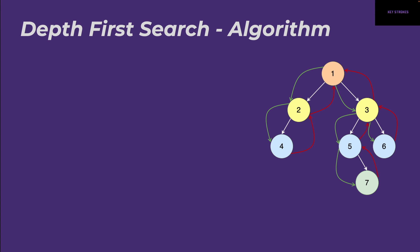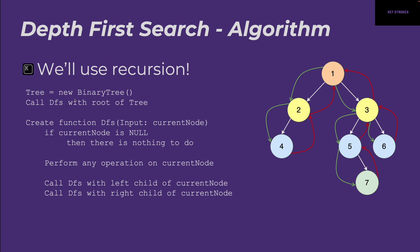Let's see how the algorithm looks for depth-first search. For DFS, we'll be using recursion. We start by defining a tree — a new binary tree — then call a DFS method with the root of the tree because that's where all traversals start from. In recursion, we always need a base case: if the current node passed to this function is null, there's nothing to do, so we return. If the current node is not null, we perform whatever operation we want — searching or any complex algorithm — then recursively call DFS for the left child and for the right child. These three operations can be shuffled in any order, and that's how all the different traversals — pre-order, in-order, and post-order — come from.